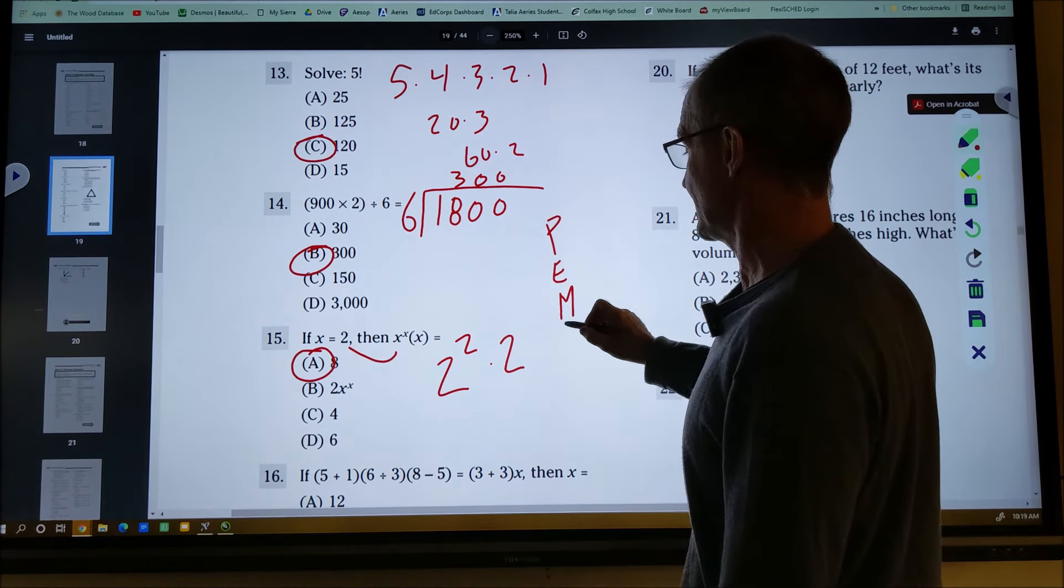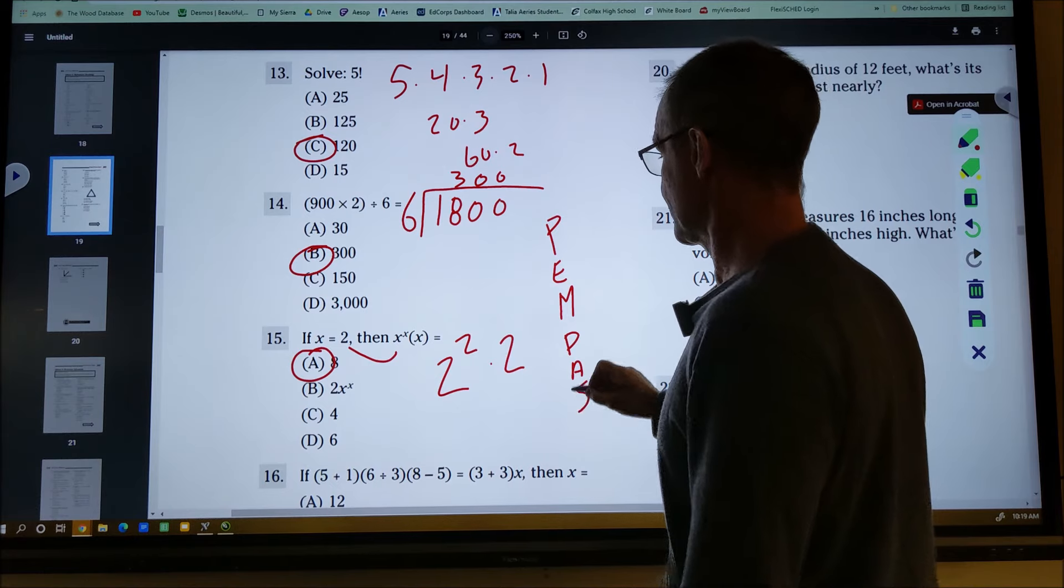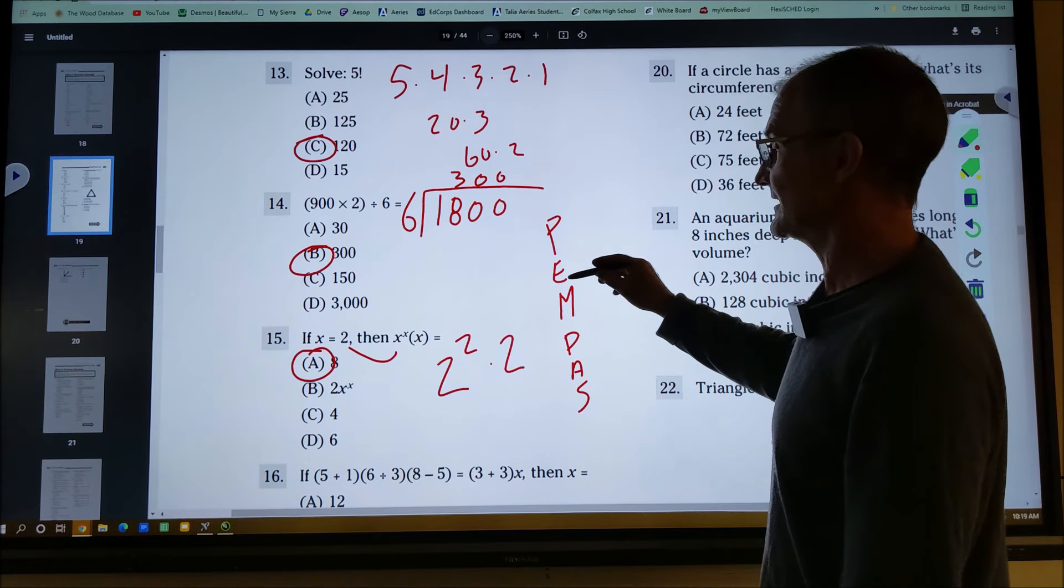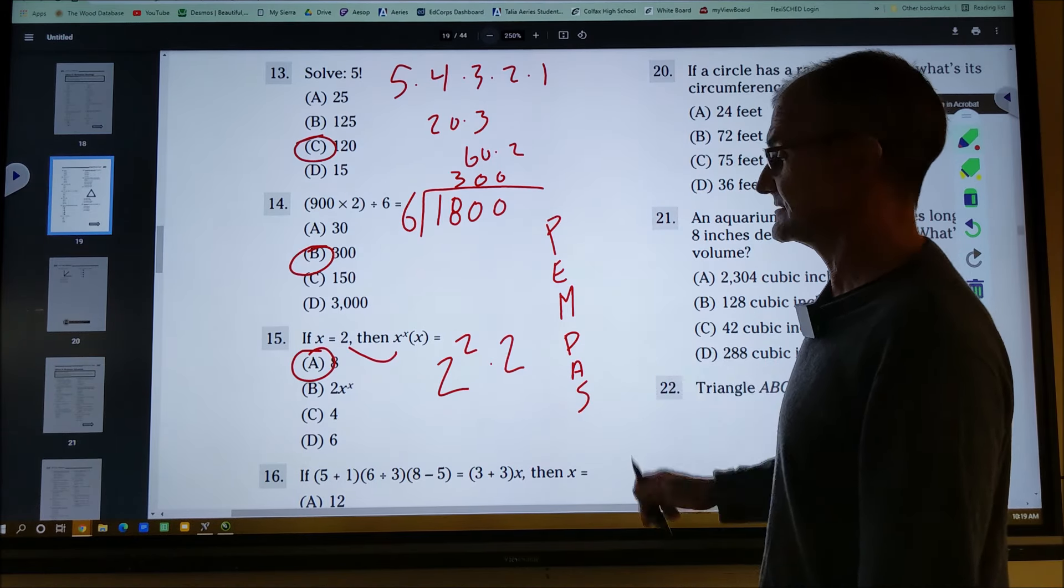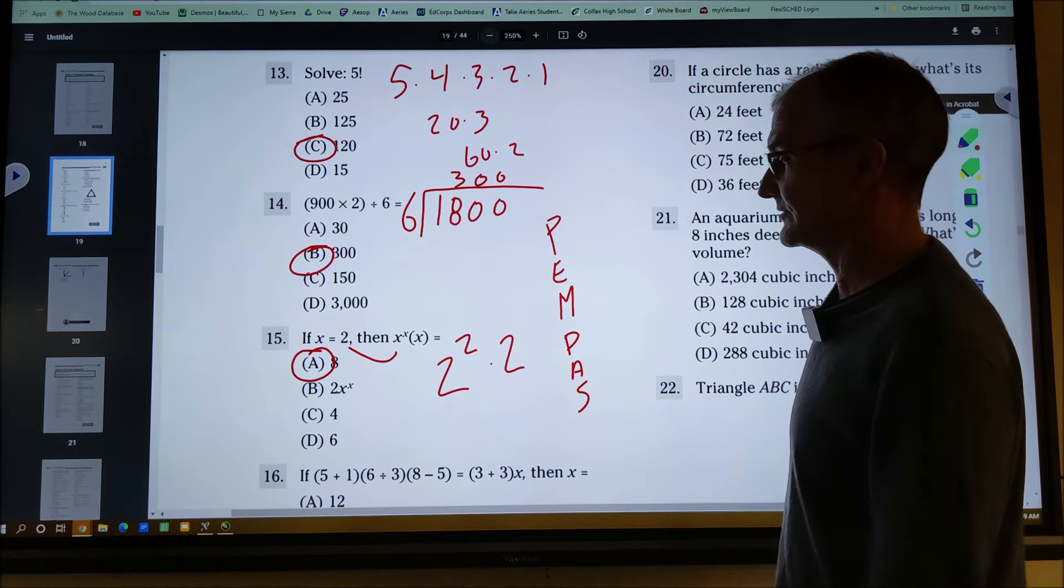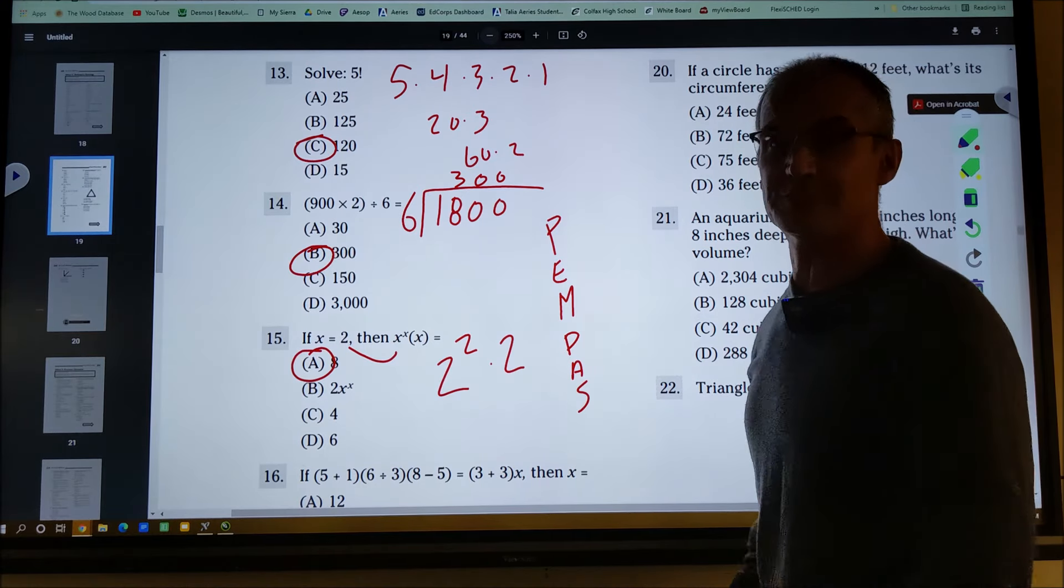The order of operations, sometimes you use this right here, PEMDAS, which means parentheses get done first, then exponents, then multiplication, division, then addition, subtraction, in order from left to right.